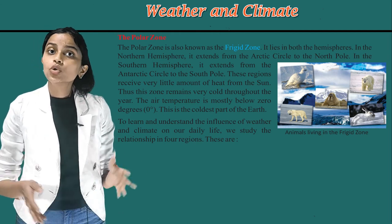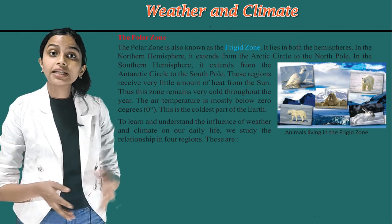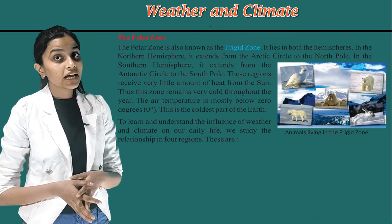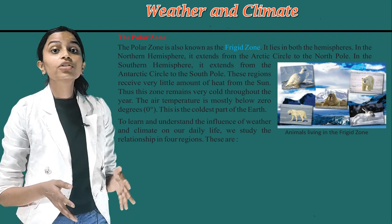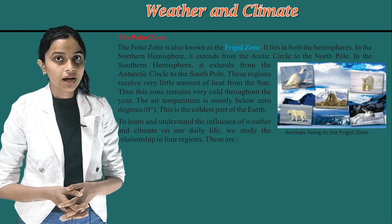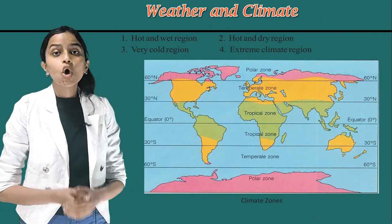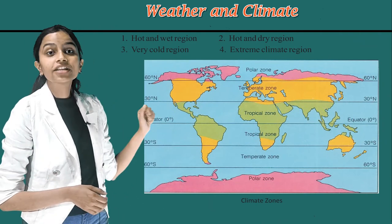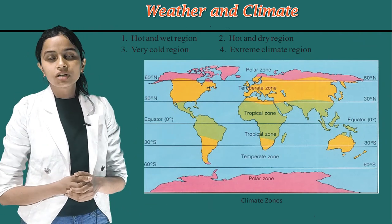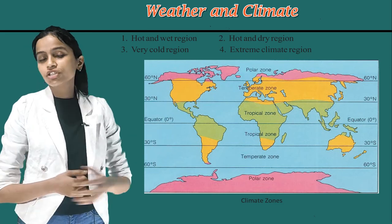To learn and understand the influence of weather and climate on our daily life, we study the relationship in four regions. These are hot and wet region, hot and dry region, very cold region, and extreme climate region.